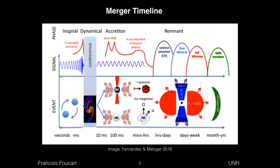Then the two objects are going to collide and merge — that lasts one to two milliseconds. That's the phase where we absolutely need numerical simulations because it's very non-linear. There are no known solutions for what happens during that phase at all. We can't even make good reasonable approximations without actually doing full simulations in general relativity. And during that phase, you start to eject a fair amount of matter, which is going to eventually power electromagnetic emission later on.